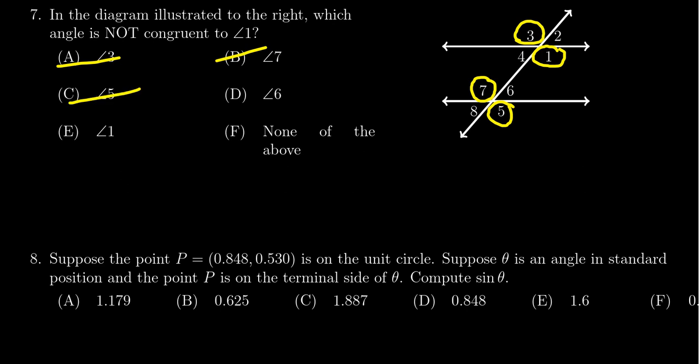So take that one off the list. And clearly angle 1 is congruent to itself, so we now have it down to either angle 6 or F, which is none of the above.